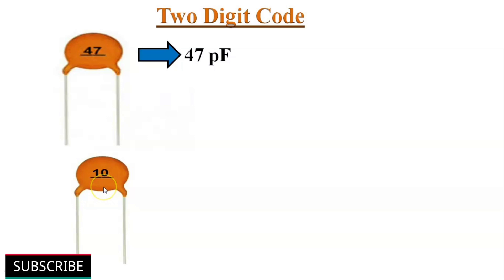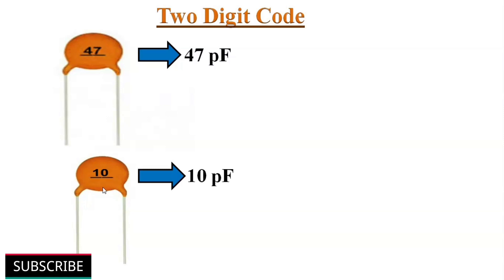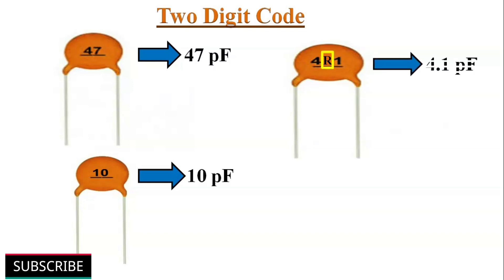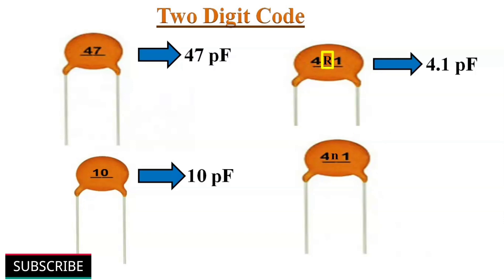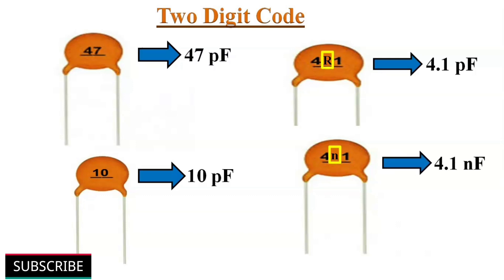Likewise, if 10 is printed on a ceramic capacitor, then its value is 10 picofarads. When small values with a decimal point need to be represented, the letter R is used — for example, 4.1 picofarad capacitance is labeled as 4R1. Similarly, the letter N indicates a nanofarad capacitor; for example, 4N1 indicates 4.1 nanofarad capacitance.